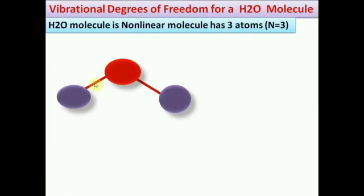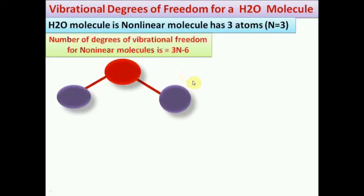Water molecule is non-linear molecule. It has 3 atoms, means in this case, n is equal to 3. For non-linear molecules, the number of degrees of vibrational freedom is given by 3n minus 6. That means 3 into 3 minus 6. Here 9 minus 6, it gives 3.